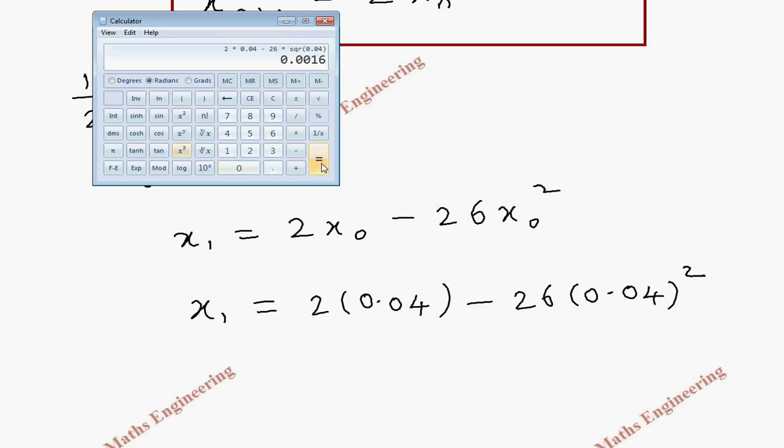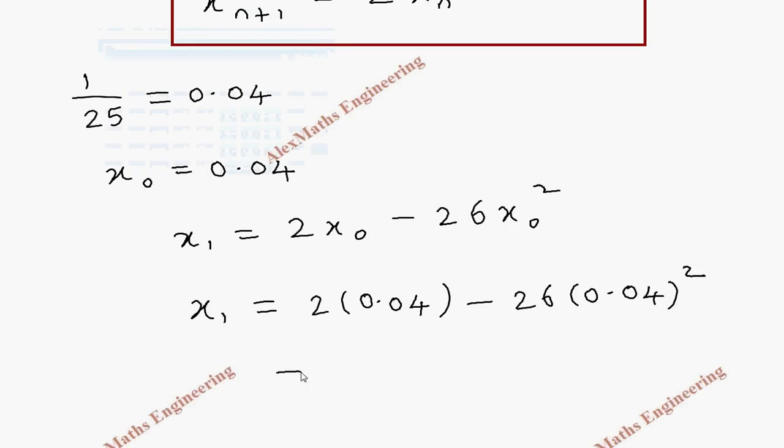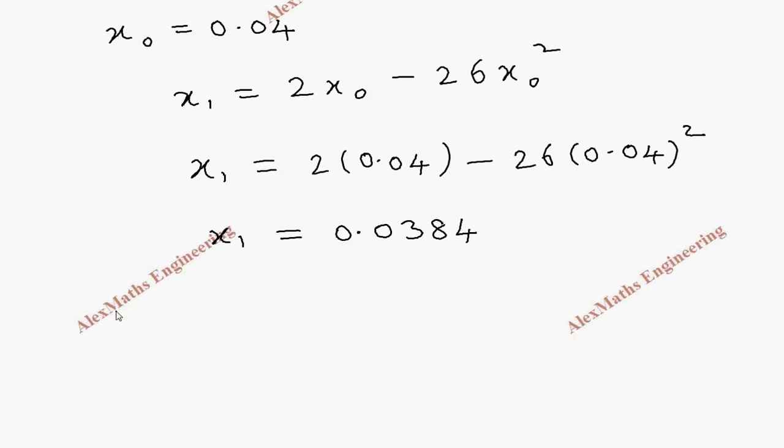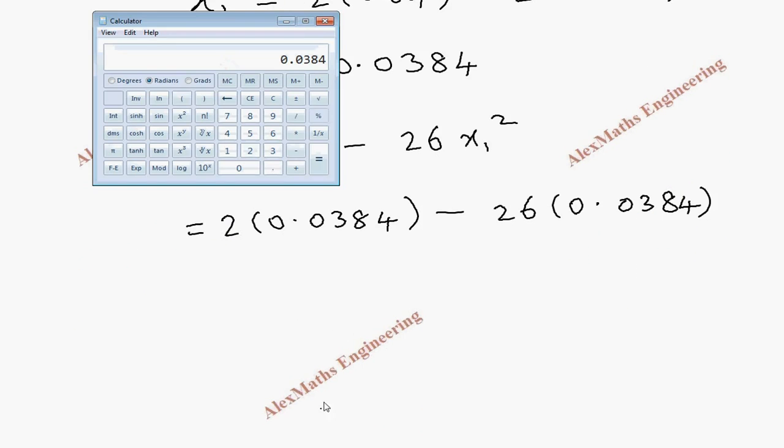Now using calculator, we take 2 times 0.04 minus 26 times 0.04, its square value. Totally this is 0.0384. This is our x_1. Using the x_1, let's find x_2 by writing 2x_1 minus 26 x_1 square. So this is 2 times 0.0384 minus 26 times 0.0384 square.